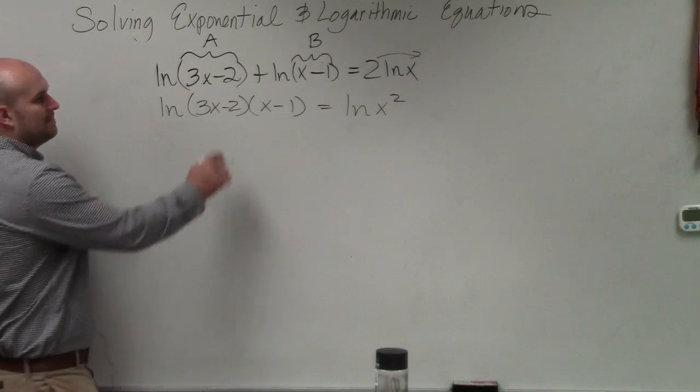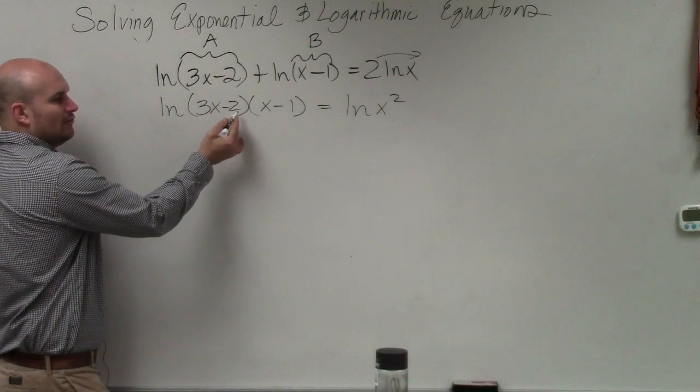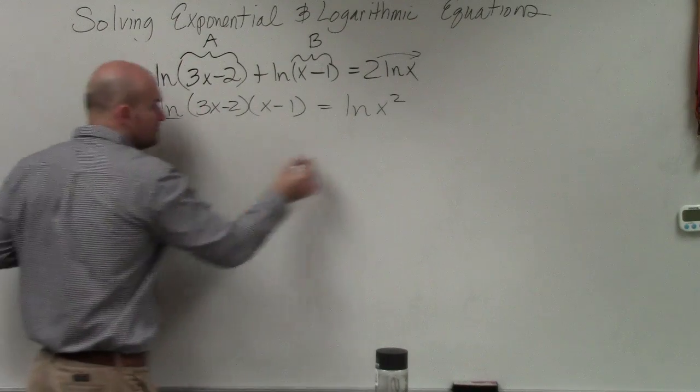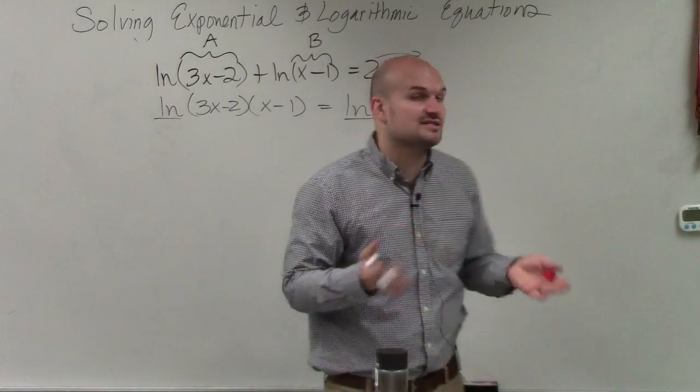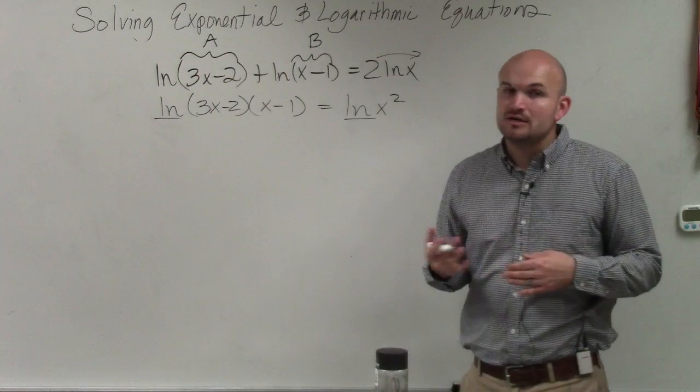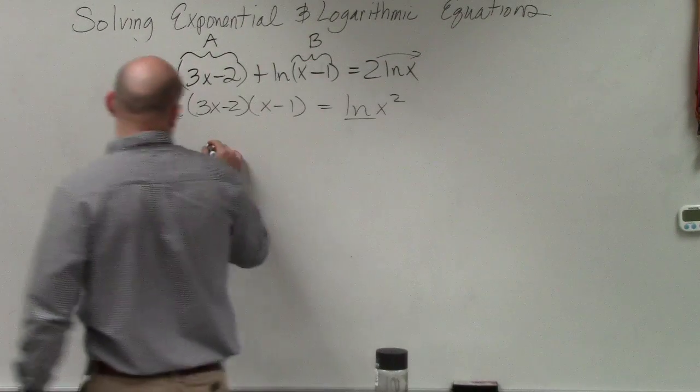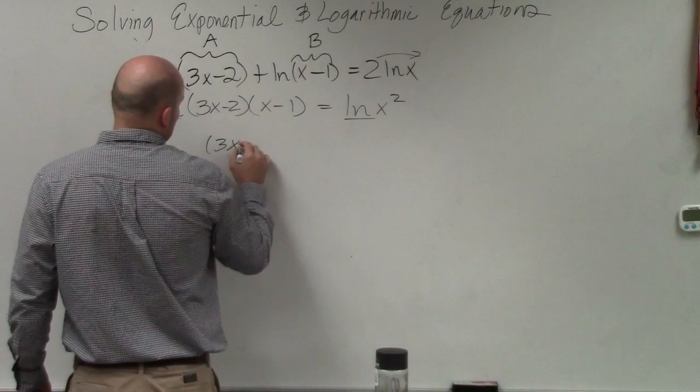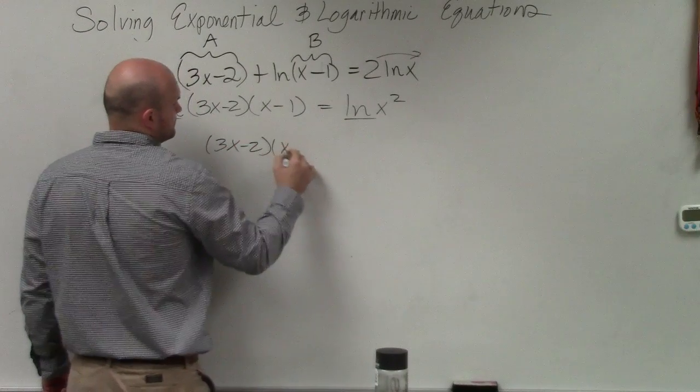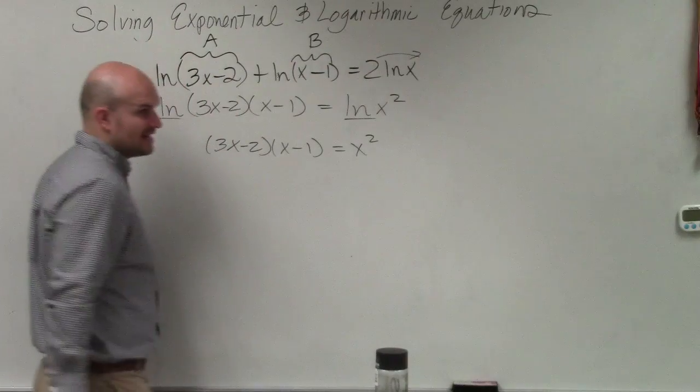So now, the next thing is, hopefully you guys see that now I have a logarithm equal to another logarithm. Since they're both ln, we know that the base is going to be E. So now, I can just separate, set this left side equal to the right side.